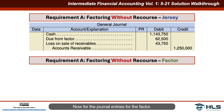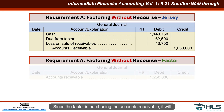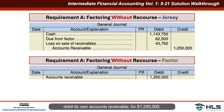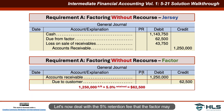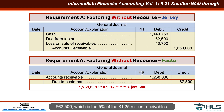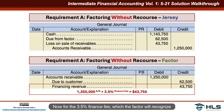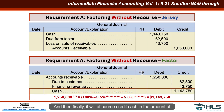Now for the factor's journal entries. Since the factor is purchasing the accounts receivable, it debits its own accounts receivable for $1,250,000. The factor credits a due to customer liability account for $62,500 — the 5% it may have to pay back if there are no returns or allowances. It credits financing revenue for $43,750 (the 3.5% finance fee). Finally, it credits cash for $1,143,750, based on total receivables less the finance fee and the amount retained.